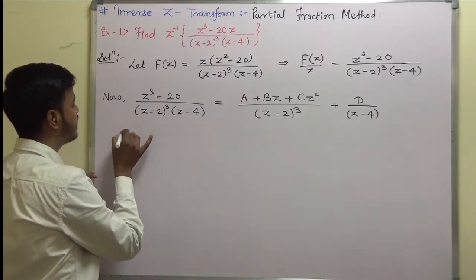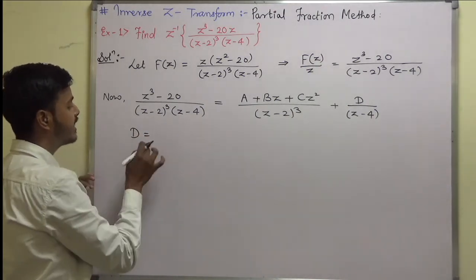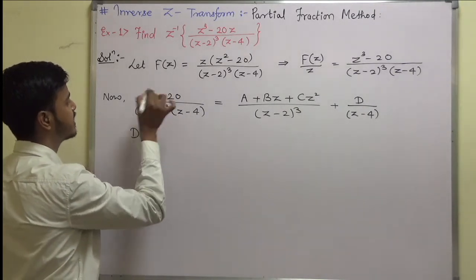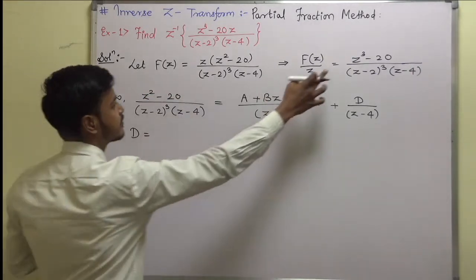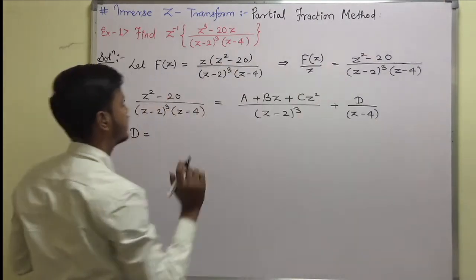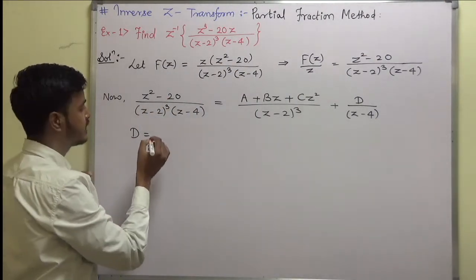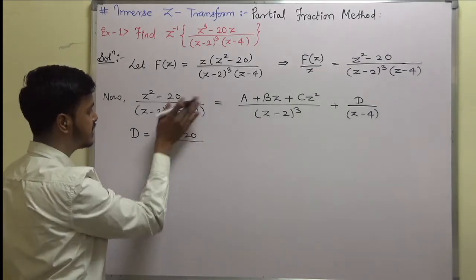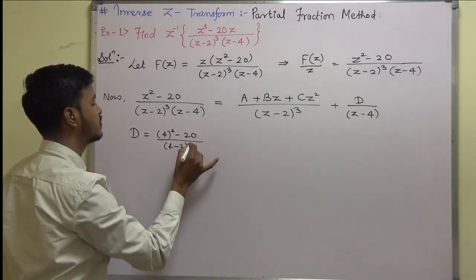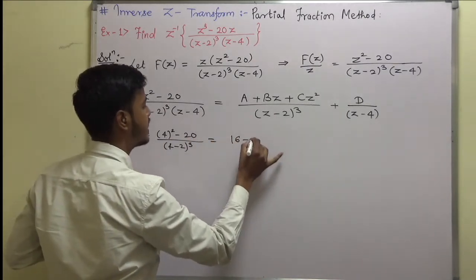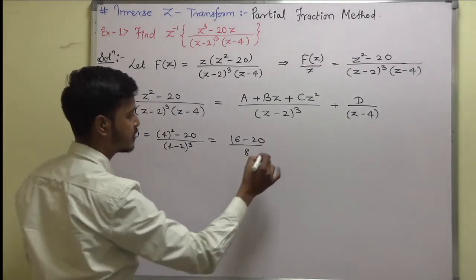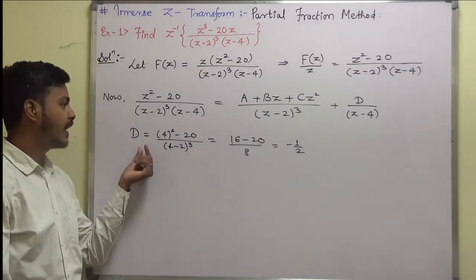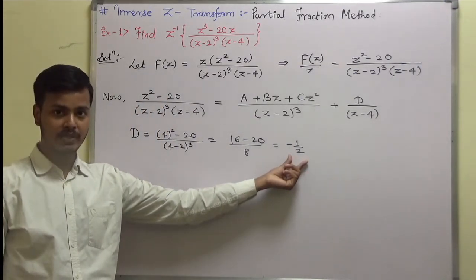So directly write d = z² - 20 upon (z - 2)³ evaluated at z = 4. That is 4² - 20 upon (4 - 2)³ = (16 - 20) / 8 = -4/8 = -1/2. So we get the value of d to be -1/2.